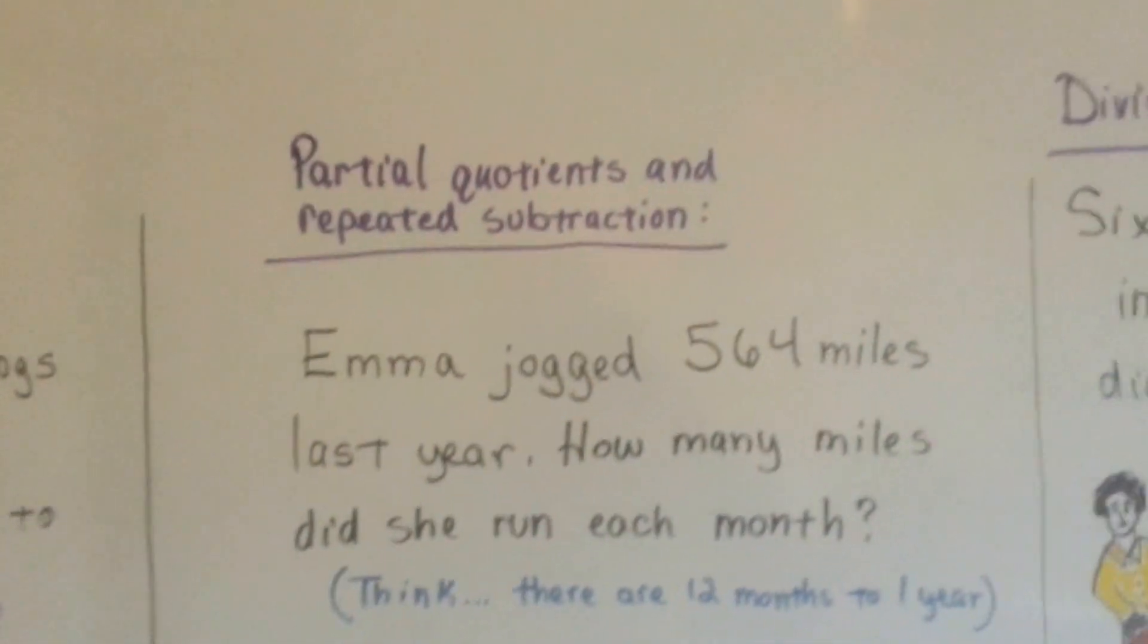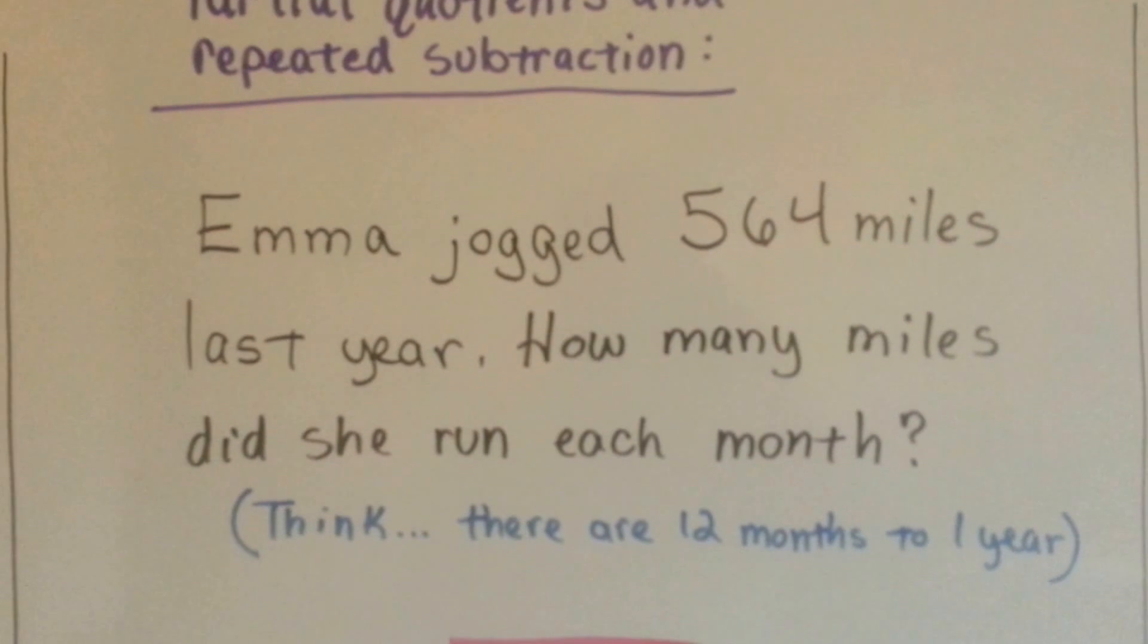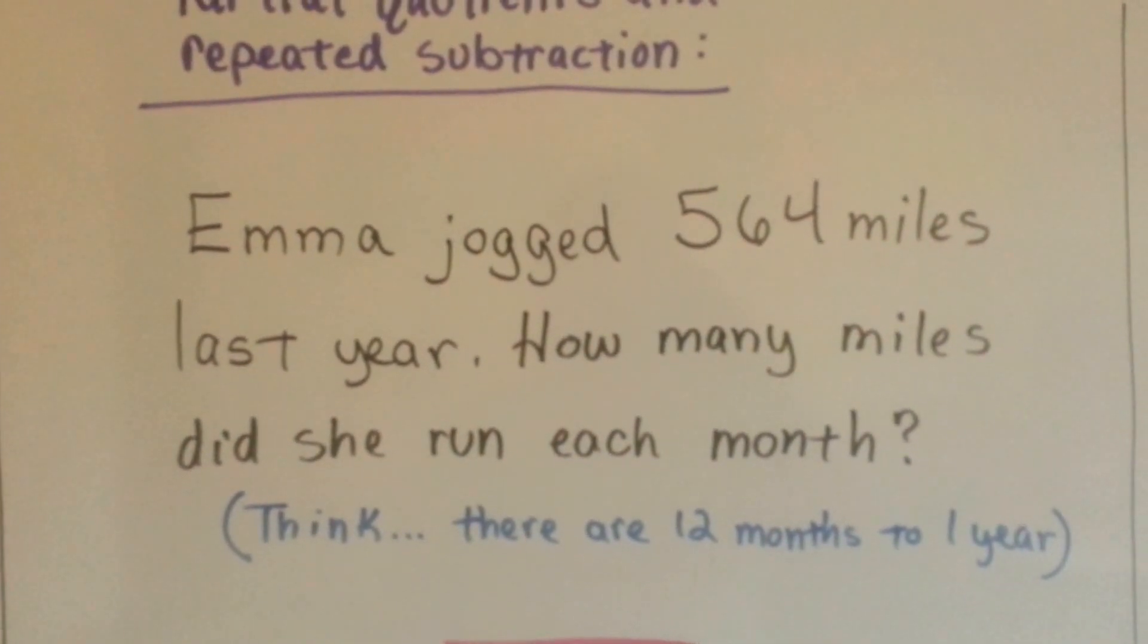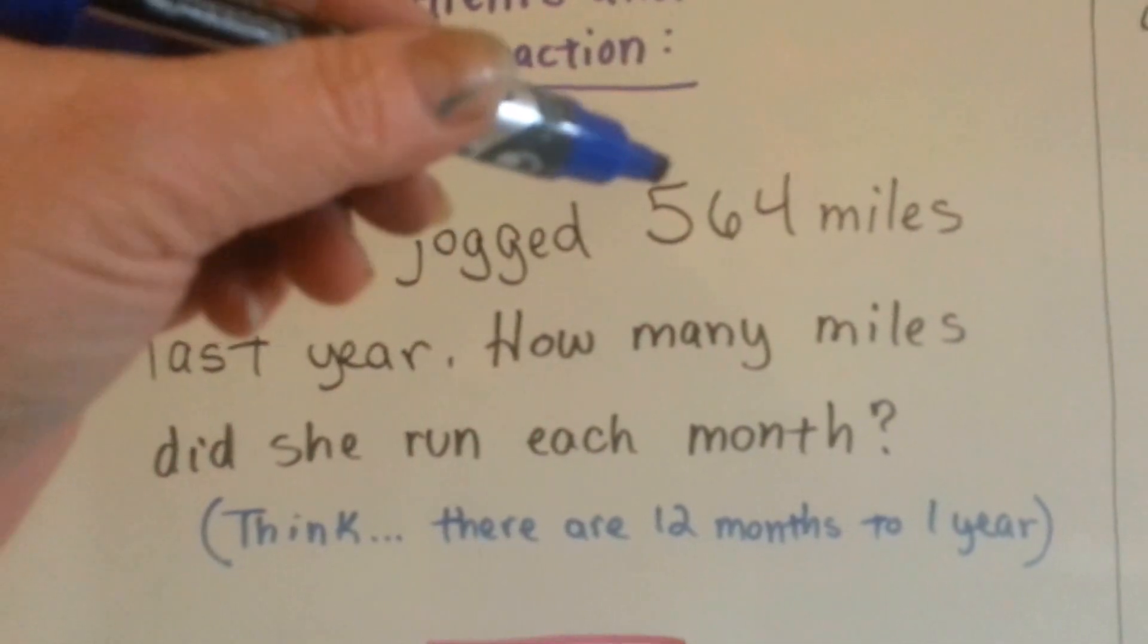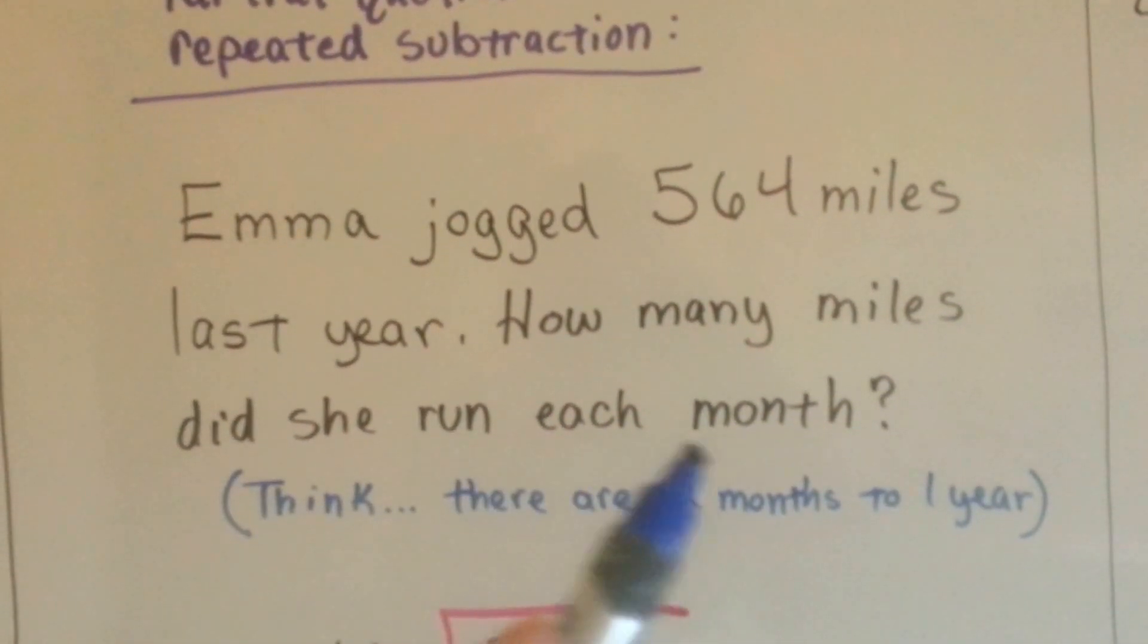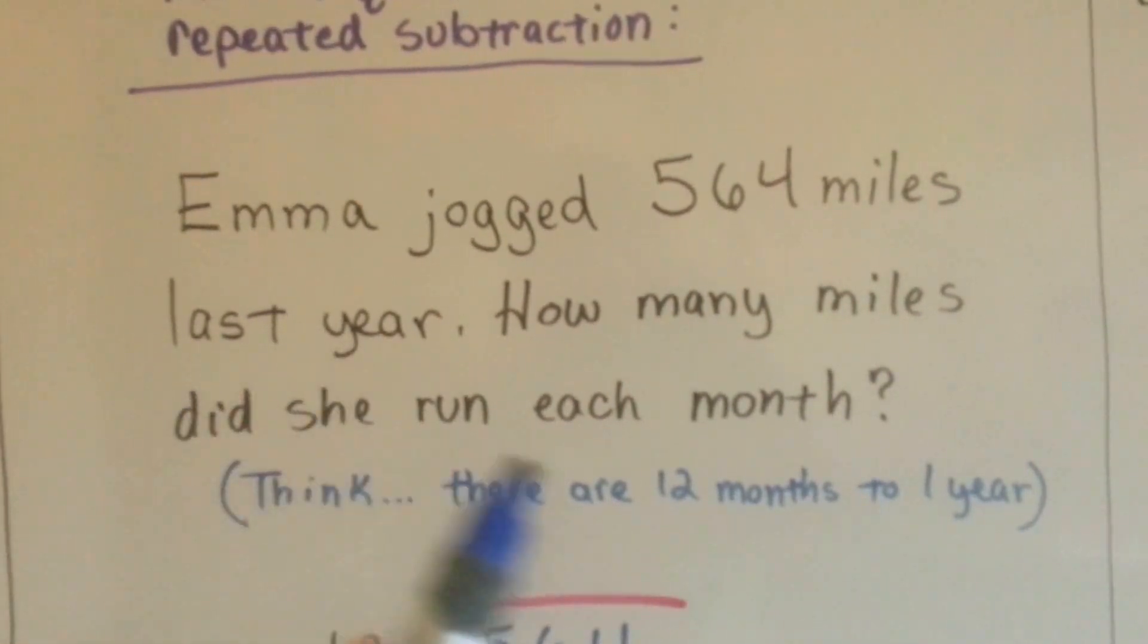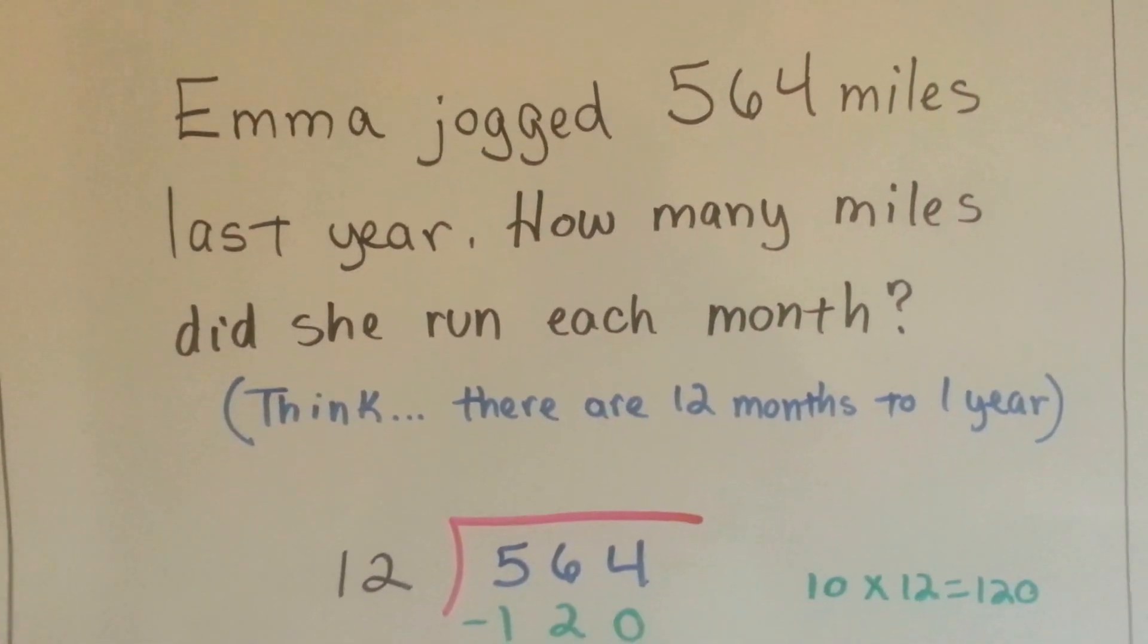Now we can use partial quotients and repeated subtraction. Emma jogged 564 miles last year. How many miles did she run each month? It only gave us one number, but it gave us a clue. How many miles did she run each month? And it was for a year. So we know there's 12 months to a year, so we must need to divide 564 by 12.